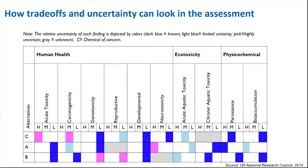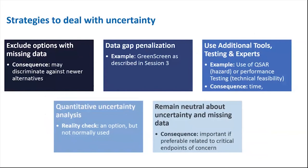You can imagine similar tables to compare options based on performance, comparative exposure, and cost. There is no correct strategy to making decisions under conditions of uncertainty. However, there are various strategies to consider. For example, you could exclude options with missing data — only alternatives with data for priority endpoints are considered, and alternatives with unknown toxicity for critical endpoints are excluded. A potential negative to this approach is that it may discriminate against newer, safer chemicals that have less available data. Alternatively, you could penalize data gaps, where uncertainty regarding a particular endpoint results in a less favorable evaluation of the alternative.